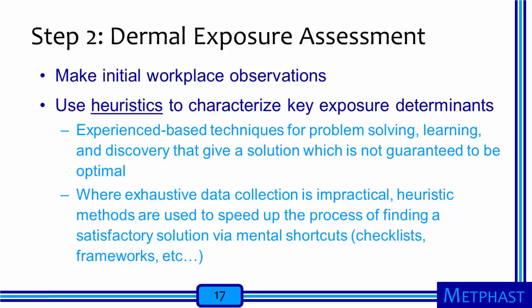Step 2 of a qualitative dermal risk assessment is to make a dermal exposure assessment. We start by making initial workplace observations, then use those observations with heuristics to characterize key exposure determinants. Heuristics are experience-based techniques for problem solving and discovery that give a solution which is not guaranteed to be optimal. Where exhaustive data collection is impractical, heuristic methods speed up the process using mental shortcuts such as checklists and frameworks. Having formal checklists can help us make better decisions.